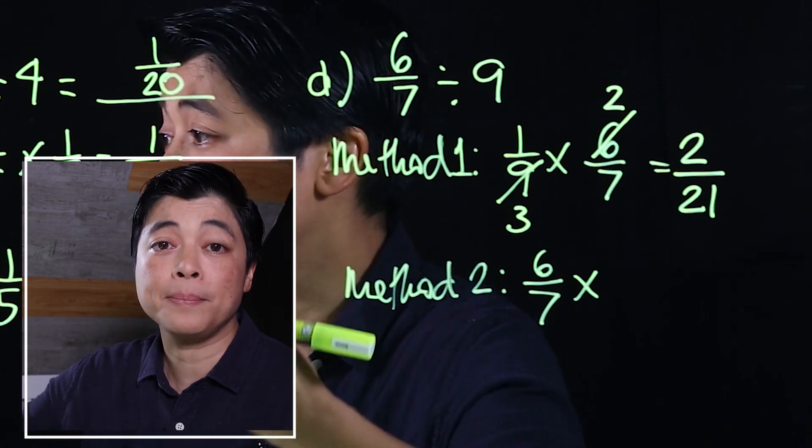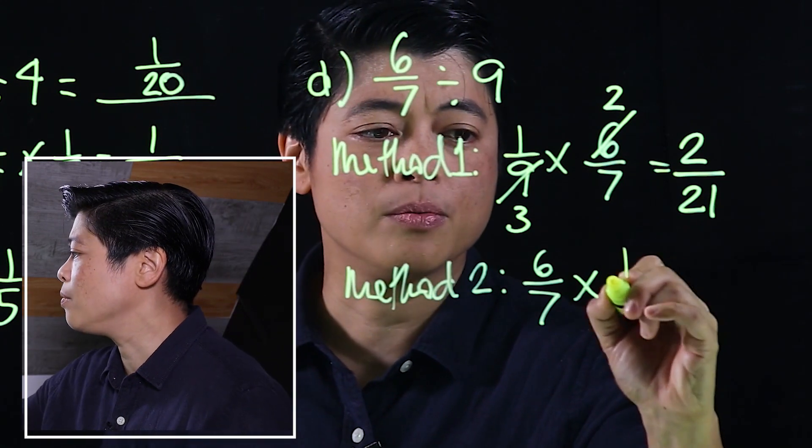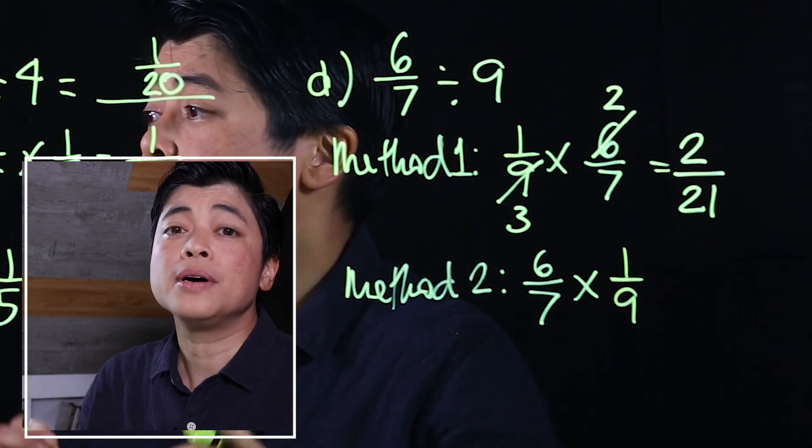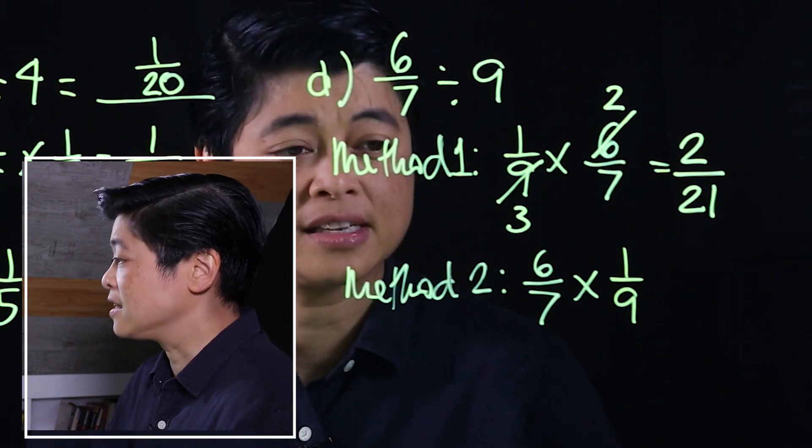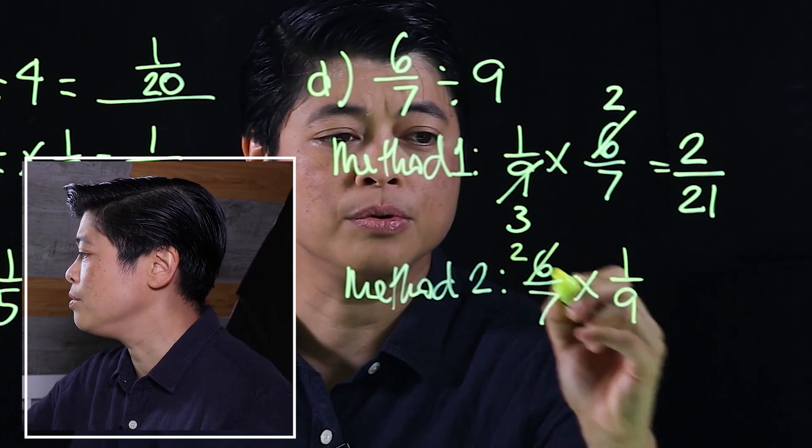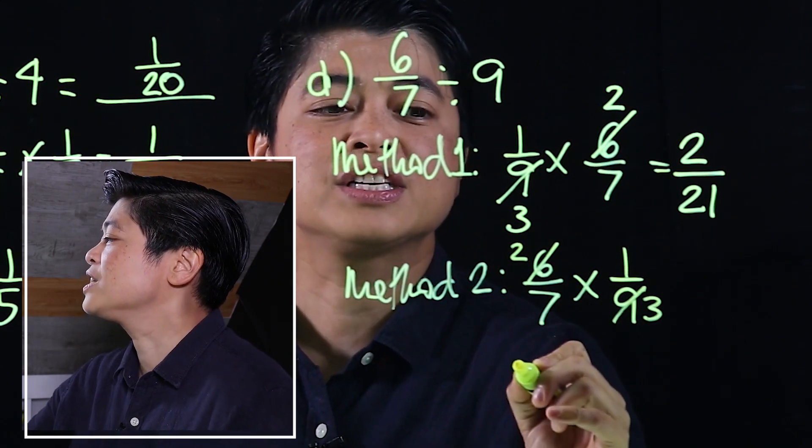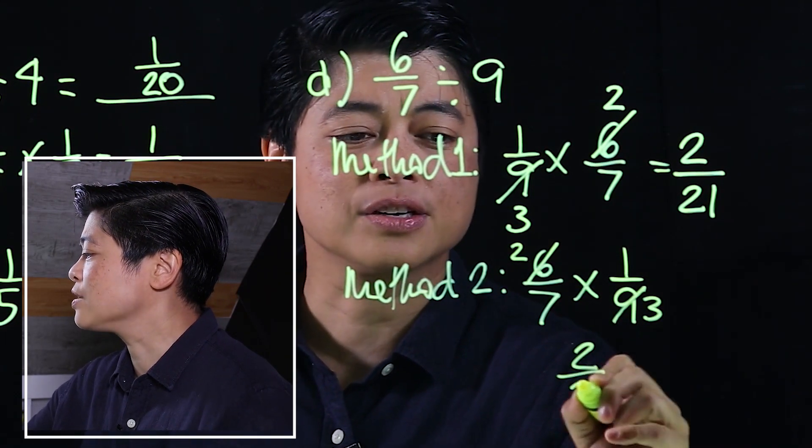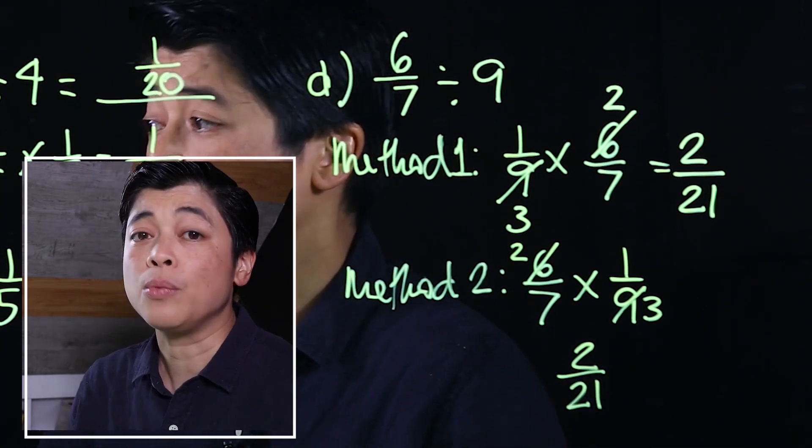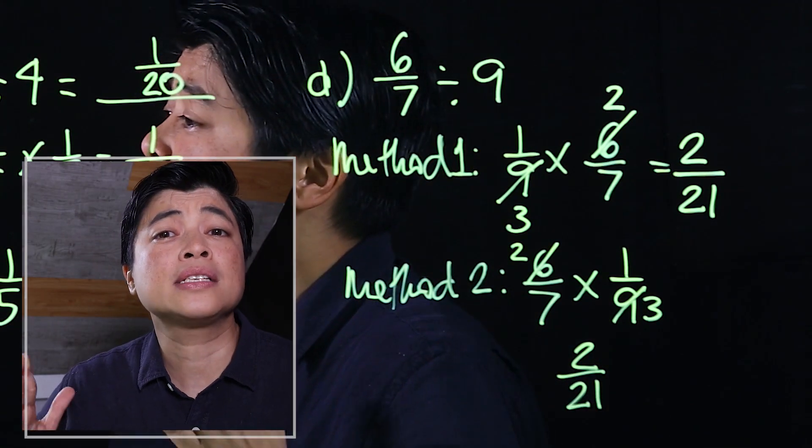Reciprocal meaning flip. The reciprocal will be 1 over 9. We cancel: this will be 2 and this will be 3, which gives us the same final answer, 2 over 21.